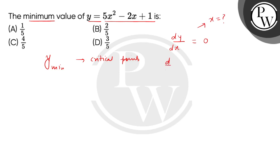We will take the derivative of the expression 5x square minus 2x plus 1 and we will put it equal to 0. So first order derivative is 10x minus 2, so this is equal to 0. We get x equals 1 by 5 which we can call the critical point.